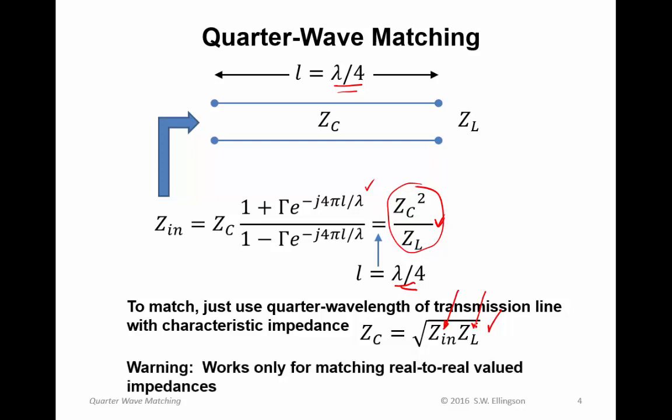Now note that this is only going to work for matching real valued impedances to other real valued impedances. If either Z in or Z L have a complex component, then the required characteristic impedance is going to be complex. A transmission line with a complex valued characteristic impedance is going to be one which stores energy.